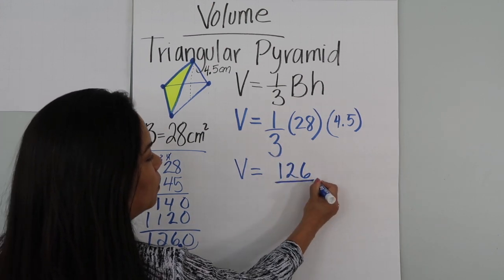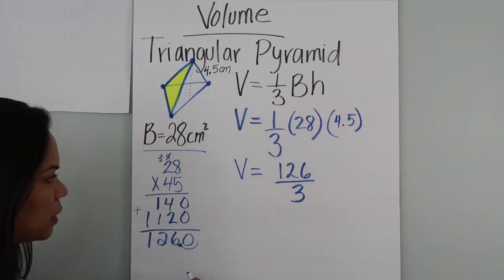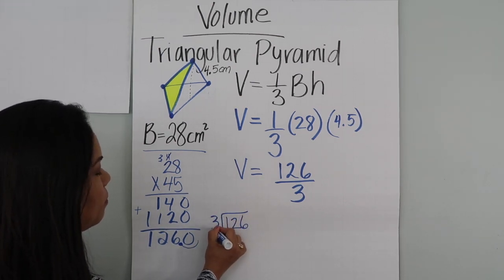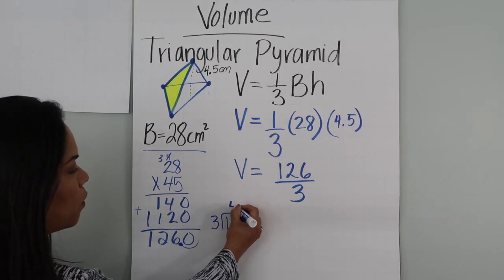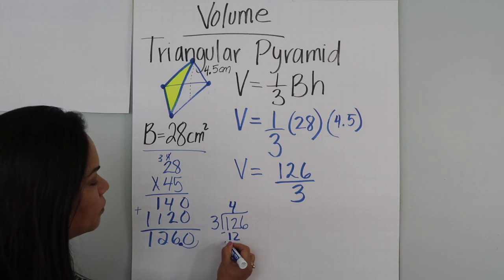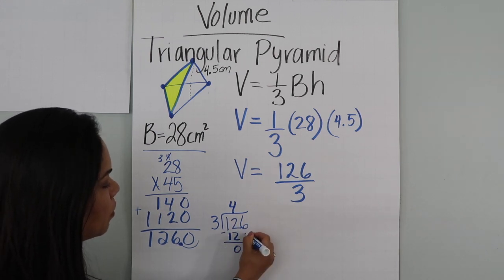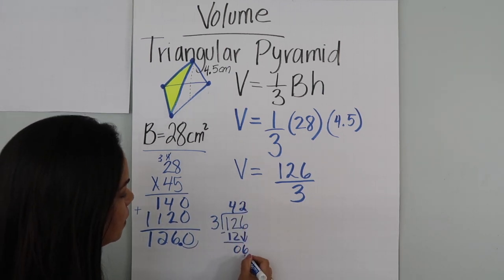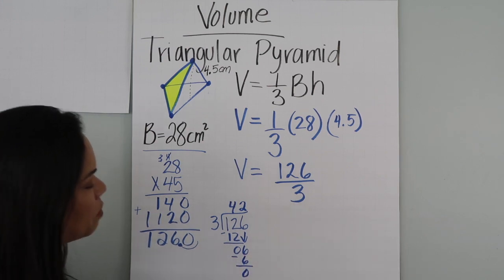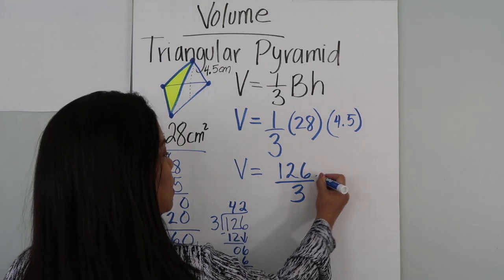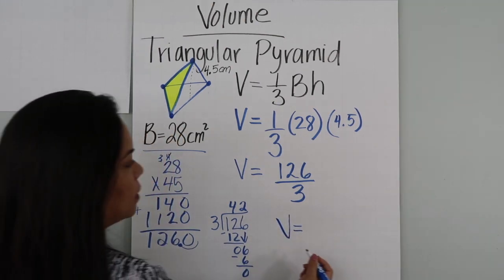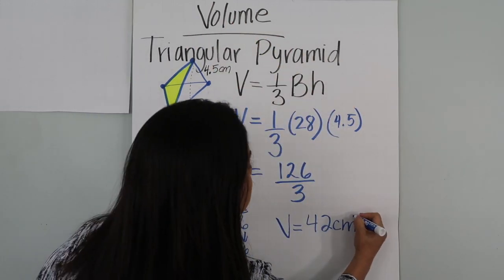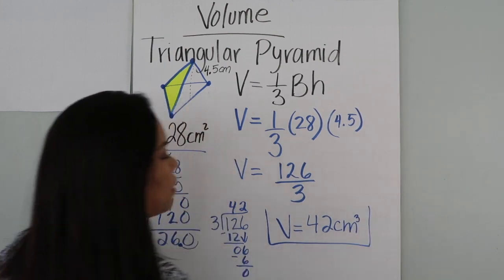Now we have to divide by 3. 126 divided by 3: 3 times 4 is 12, 12 minus 12 is 0, bring the 6 down, 3 times 2 is 6, 6 minus 6 is 0 remainder. So the answer for this volume is 42 cubic centimeters.